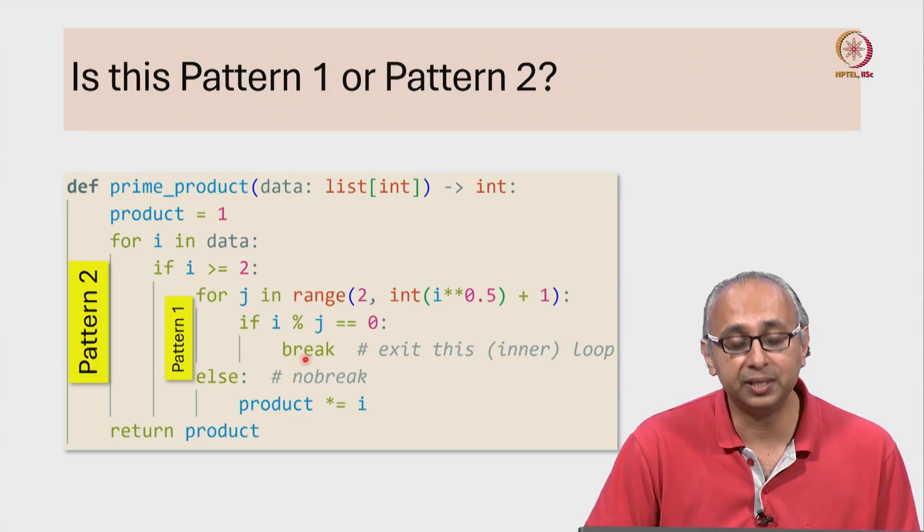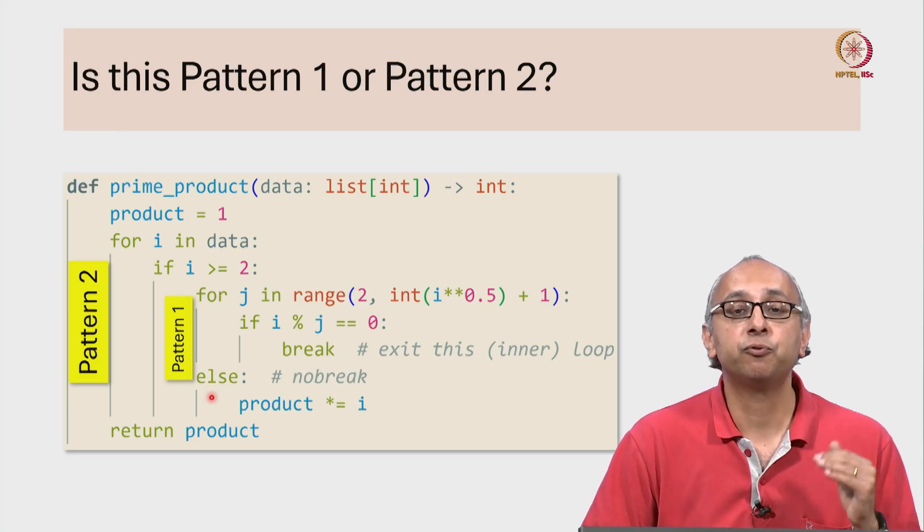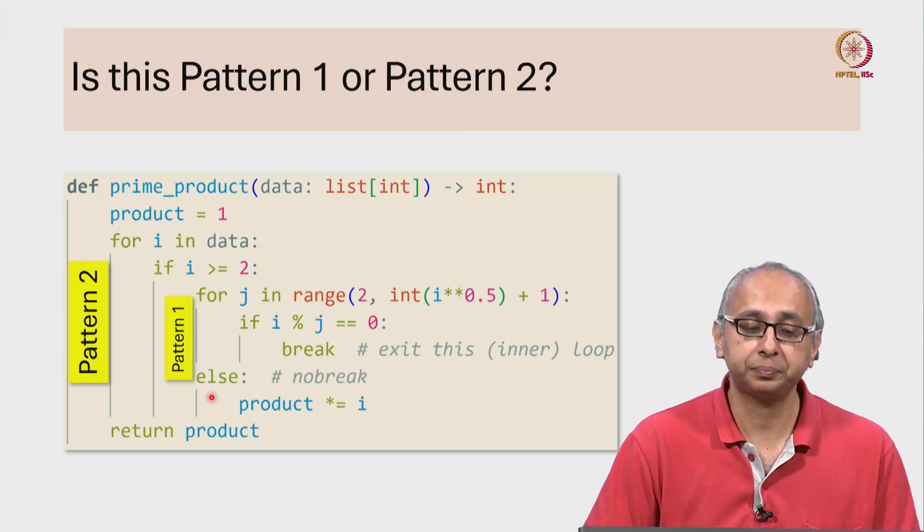On the other hand, if we ever did encounter a break, we would not go into this else. This else is reserved for the situation where no breaks are encountered. So if we did encounter this break, we would exit this loop and we would go to the next statement after else.